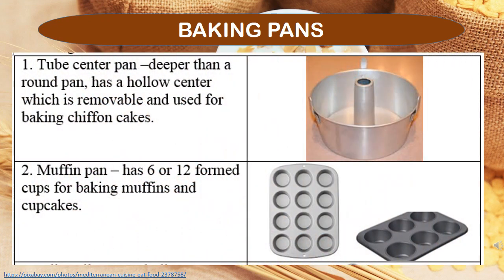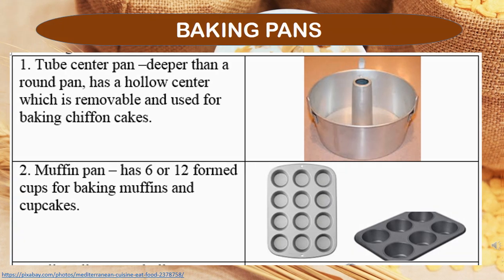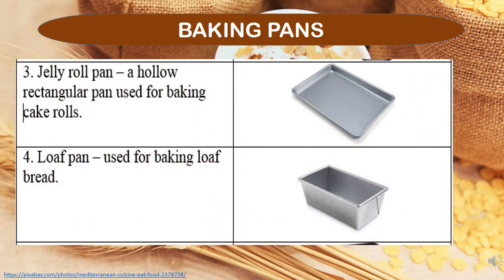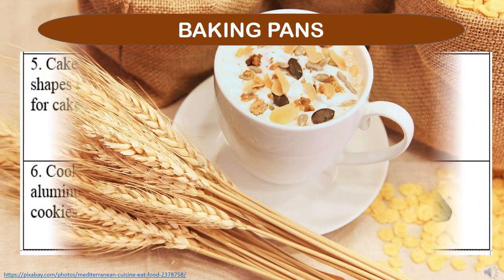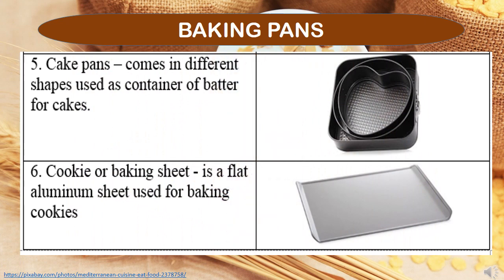Baking Pans: The first example is the tube center pan, which is deeper than a round pan and has a hollow center that is removable, used for baking chiffon cakes. The muffin pan has 6 or 12 form cups for baking muffins and cupcakes. The jelly roll pan is a hollow rectangular pan used for baking cake rolls. The loaf pan is used for baking loaf bread. Cake pans come in different shapes used as containers for cake batter. The cookie or baking sheet is a flat aluminum sheet used for baking cookies.